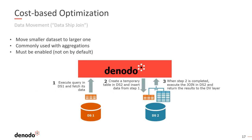Another example of cost-based optimization is data movement, also called data ship join. The concept is that we're going to move a smaller dataset to a larger one — commonly seen with aggregations. This has to be explicitly enabled, since DBAs get very upset when tables are created in their databases without their knowledge. The way it works: Denodo first queries dataset one and brings that data back to the Denodo server, then creates a temporary table in data store two using the data from data store one, then joins that temporary table to the existing table in data store two, and finally drops the temporary table when the query is done.